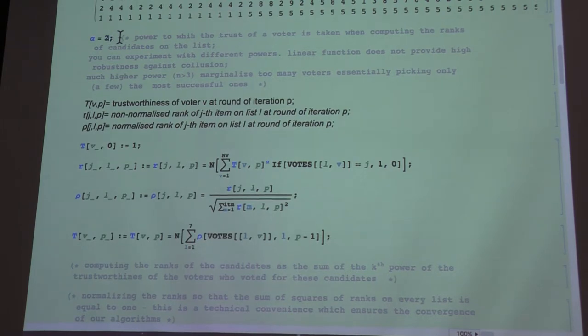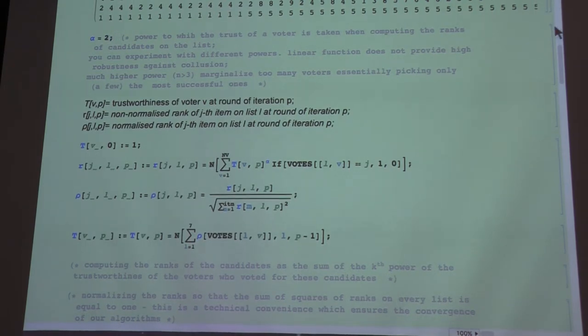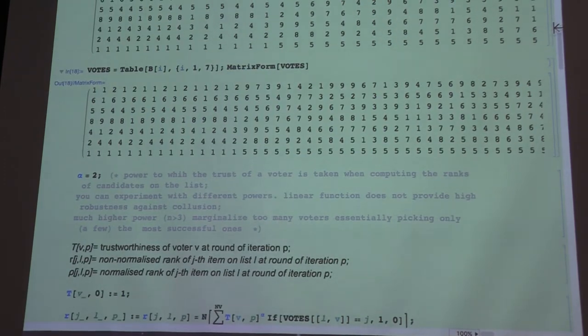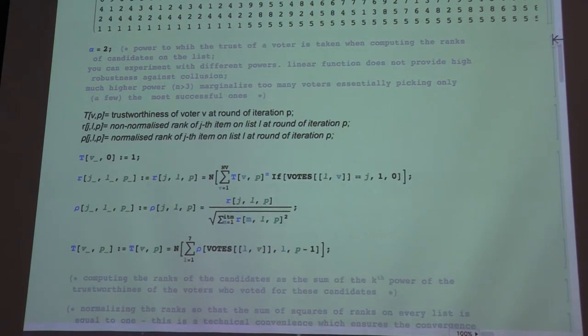So let's say we set it equal to 2. And in fact we can run it with 2 and then we run it with 3 so that you can see the change. So we tell Mathematica now what the algorithm is.